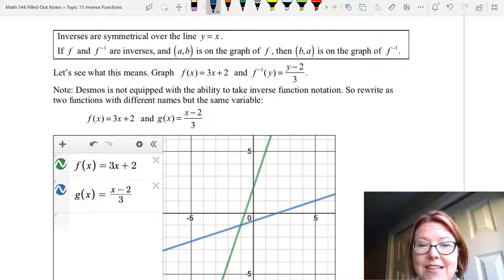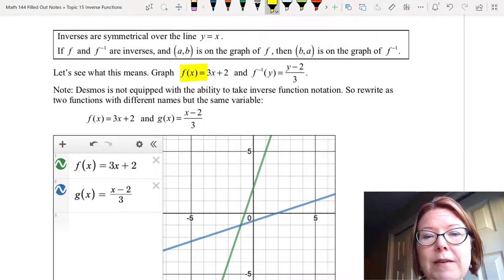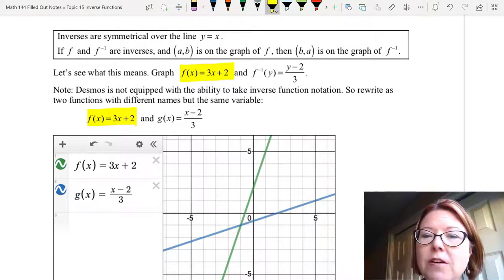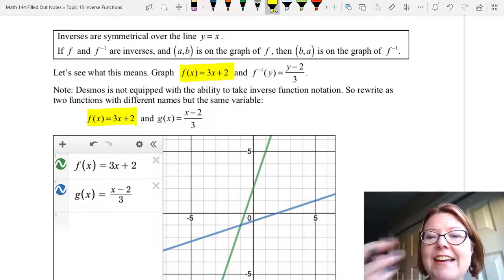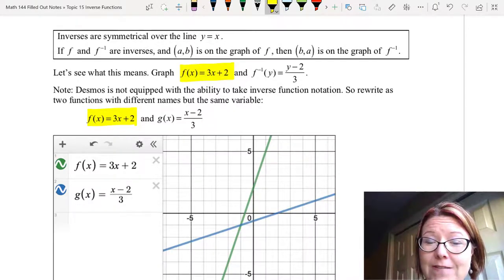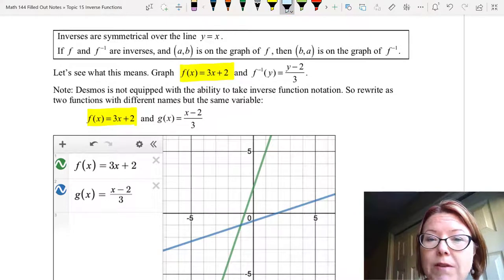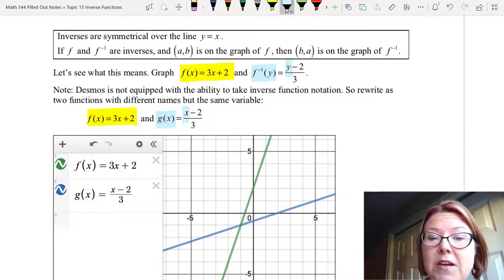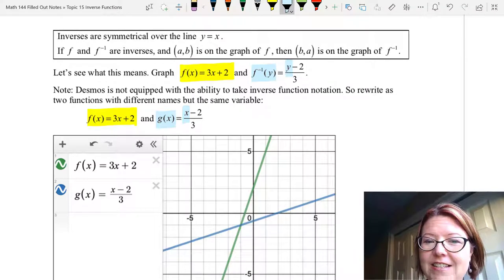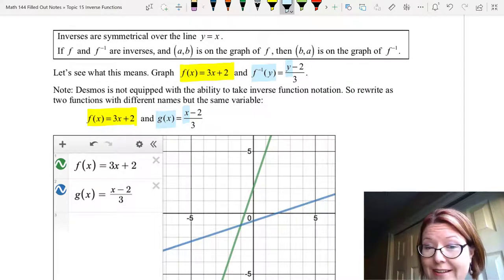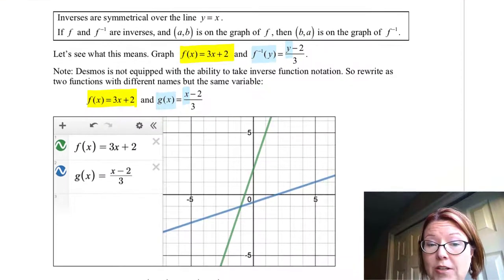So in this case, f(x) = 3x + 2 is no problem. That's our first function written in terms of the variable x. Now we're going to rewrite f inverse of y as another function in terms of x. When we rewrite this, all we're doing is taking f inverse y and rewriting it as g(x), which means that the y becomes an x, giving us g(x) = (x - 2)/3. Now that we've rewritten this, we can take a look at the graph.